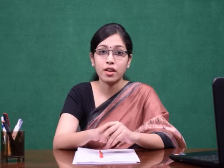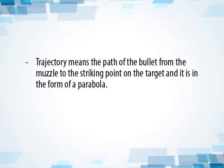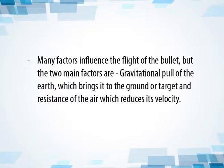There are three basic considerations regarding flight of projectiles. First is trajectory — the path of the bullet from the muzzle to the striking point on the target, in the form of a parabola. Second, the flight of all projectiles, whether through air or in vacuum, is governed by Newton's laws of motion. Third, many factors influence the flight of the bullet, but the two main factors are the gravitational pull of the earth, which brings it to the ground or target, and the resistance of air, which reduces its velocity during gyrostatic motion.